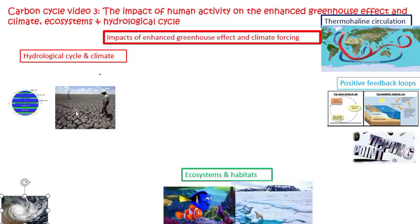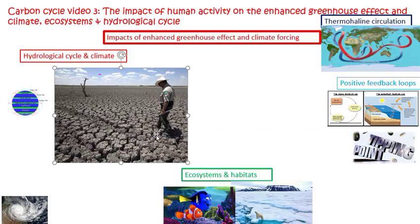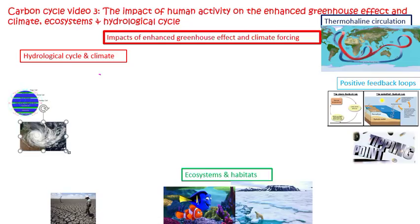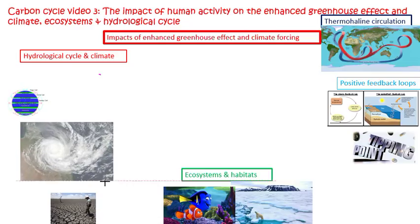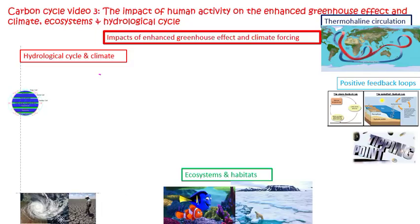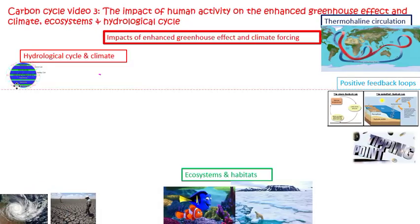By region, then: some regions are going to become warmer and drier and suffer from drought. Some regions are going to become wetter and suffer from more storms. Along with that, coastal areas are more at risk because of storm surges.